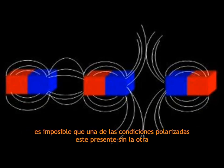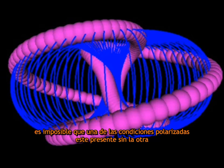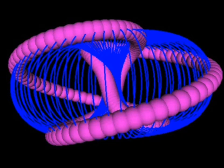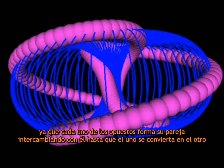It is impossible for one of the polarized conditions to be present without the other. For each other's opposite borns its mate and interchanges with it until each one becomes the other.